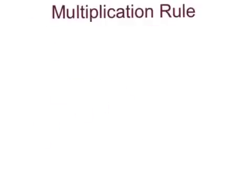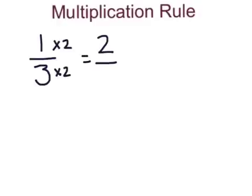Now let's discuss the multiplication rule for finding equivalent fractions. Let's start out by looking at the fraction one-third. The multiplication rule says that to find an equivalent fraction, I have to multiply both the numerator and the denominator of the fraction by the same number. Let's start out relatively easy and multiply the top and the bottom by two. One times two is two, and three times two is six, making two-sixths an equivalent fraction for one-third.